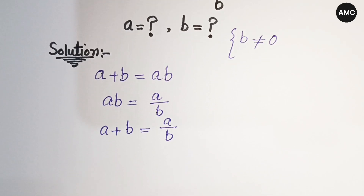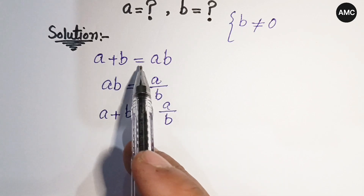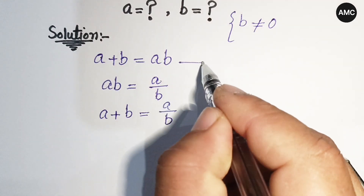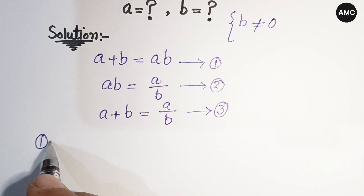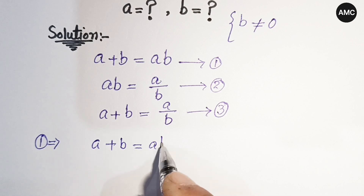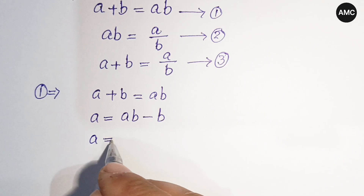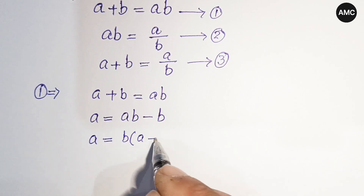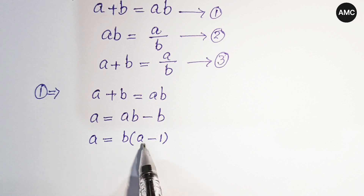Let's label these as equation one, two, and three. From equation one, a plus b equals ab. Shifting terms, we get a times b minus a equals b, so factoring out b gives us b times (a minus 1). This alone doesn't let us find unique values of a and b.